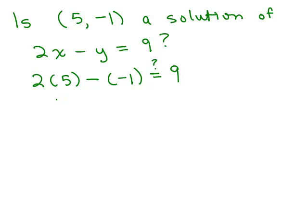So let's see. 10, right? That's 2 times 5. Minus negative 1 is plus 1. So you know what? No. 11 is not 9. If we were asked to graph the line, we would have to find several solutions. But we're just checking to see if these are solutions or not.